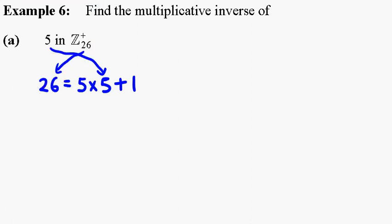And we now proceed with the algorithm. 5 will be equal to, repeat the 1 here, so this is 5 times 1 plus 0.